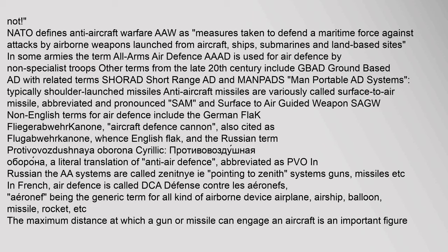Non-English terms for air defense include the German 'Flak' (Fliegerabwehrkanone, aircraft defense cannon), and the Russian term Protivovozdushnaya Oborona, a literal translation of anti-air defense, abbreviated as PVO in Russian. The AA systems are called zenithnie, i.e. pointing-to-zenith systems — guns, missiles, etc.